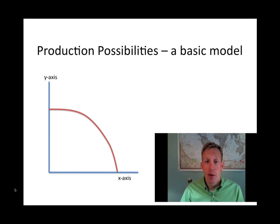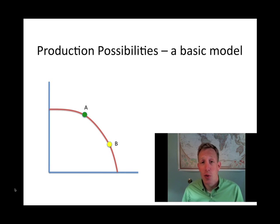So you can consume at point A on the graph or you can consume at point B on the graph or any combination on the graph of goods that are illustrated on the x-axis and the y-axis. In this case, we'll just take a look at two very basic categories of goods. We'll have food on the y-axis and guns on the x-axis.